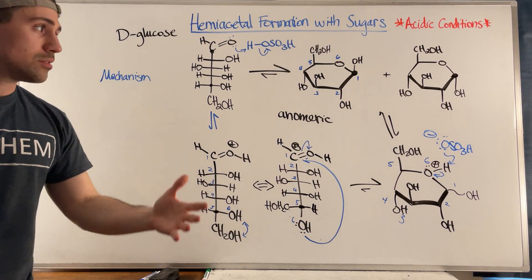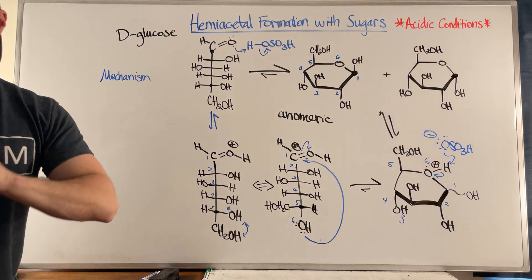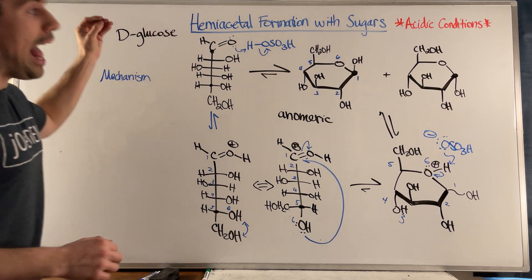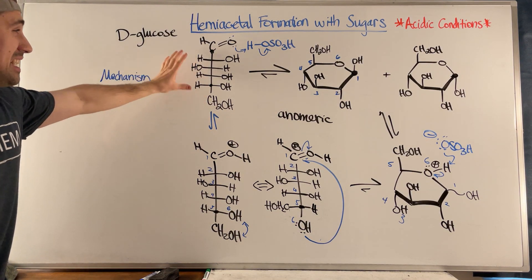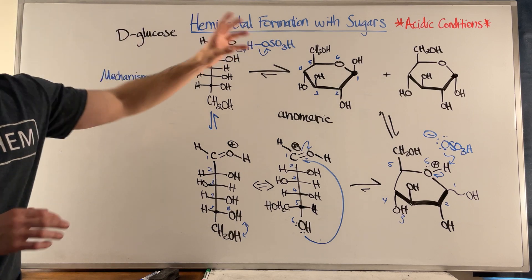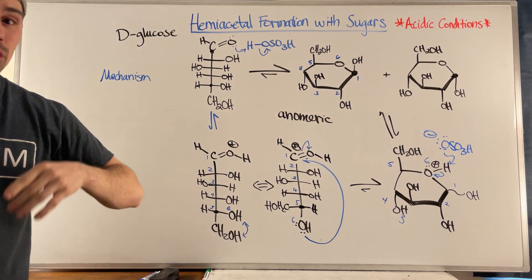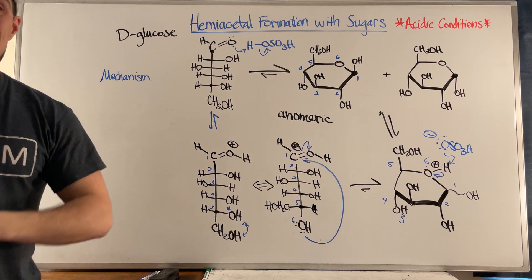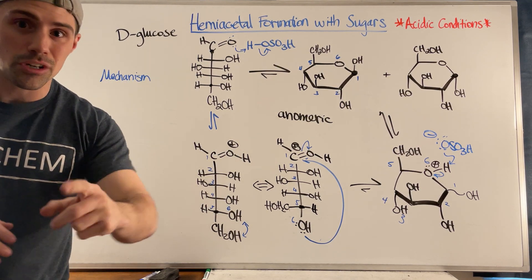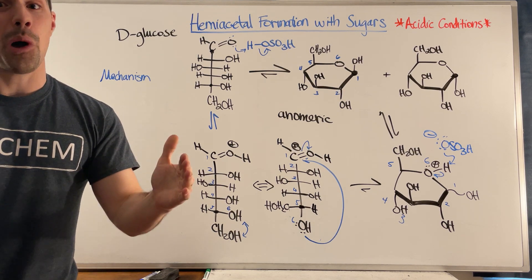The last step is a cleanup step - the conjugate base comes back and helps deprotonate the oxygen in the ring. You get your product mixture. The key points: hemiacetal formation happens in acidic conditions - you need acid for this. If you had a Fischer projection in neutral conditions, you wouldn't be doing hemiacetal formation. This equilibrium heavily favors the cyclic form - like 99.9% cyclic. We'll talk more about Haworth projections in the very next video. If you're on YouTube, check out jochem.io for a free worksheet with answers. Thanks so much for watching!